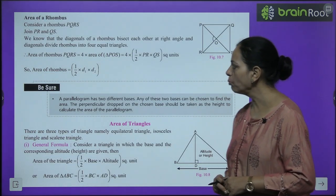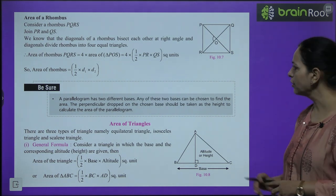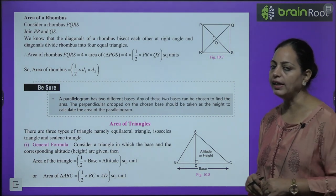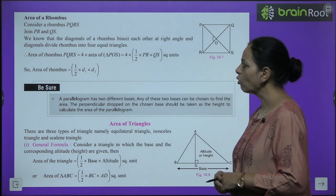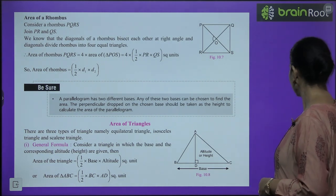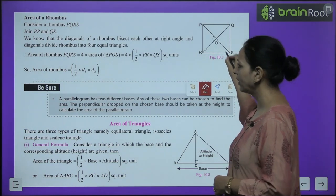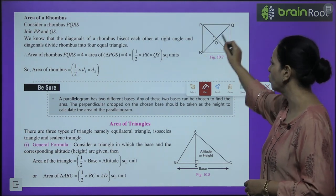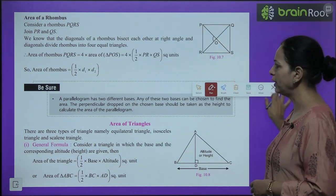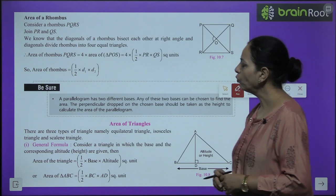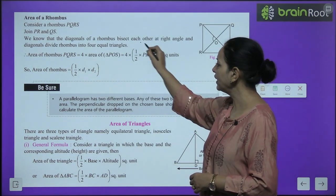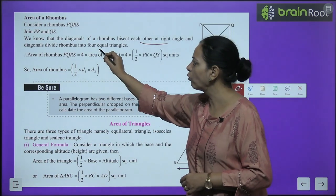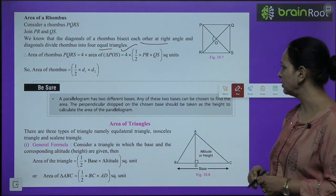Area of a rhombus: in a rhombus all sides are equal. Consider rhombus PQRS with diagonals drawn. The diagonals bisect each other at 90°, dividing the rhombus into four equal right triangles.